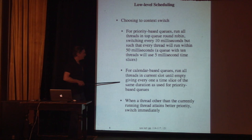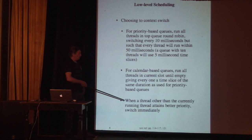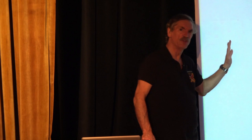For calendar-based queues, we run all threads in the current slot until it's empty, using the same duration as the priority-based queues — 50 milliseconds max per queue. When a thread other than the currently running one attains a better priority, we switch immediately. For example, if we're running something in the calendar queue and an interrupt arrives on the top priority queue, we will switch over to that interrupt thread as soon as it's practical.